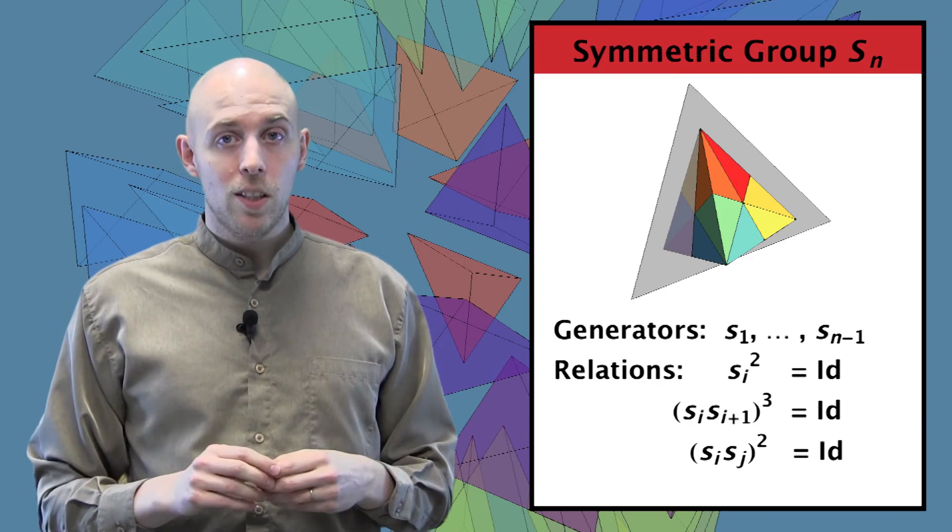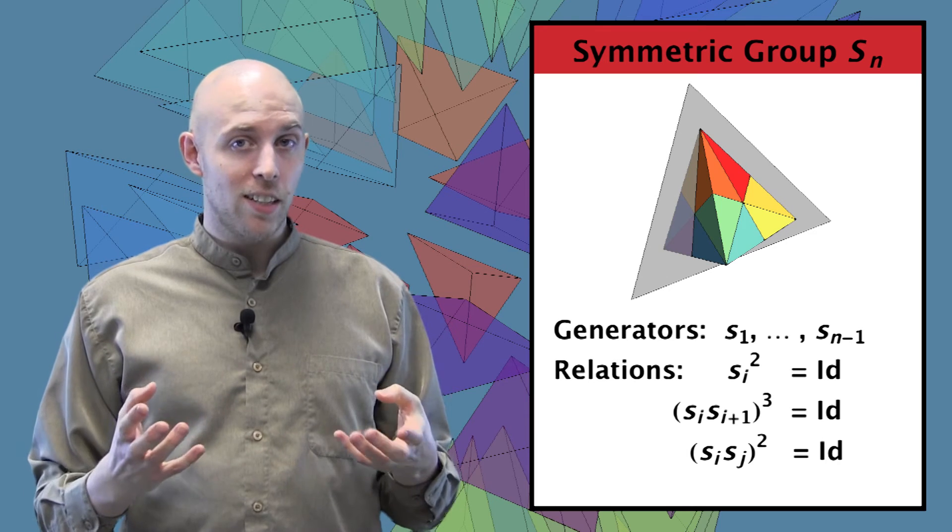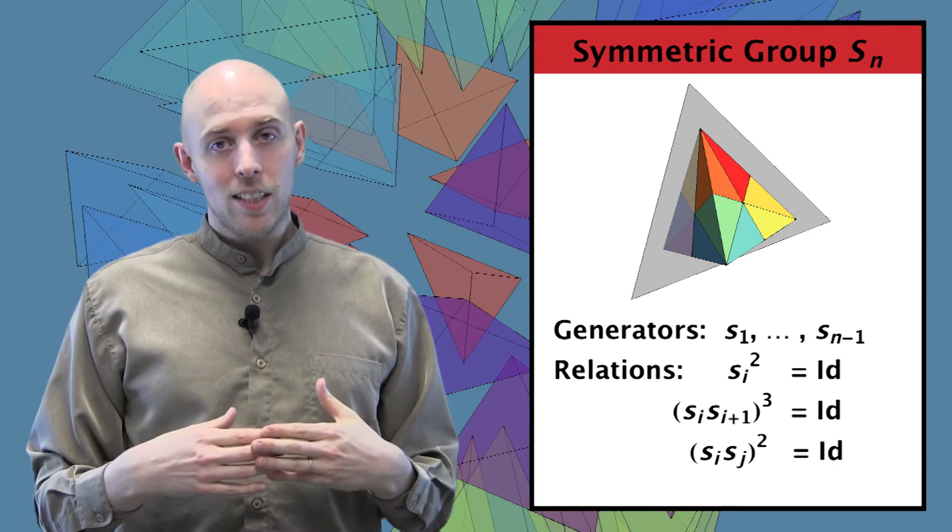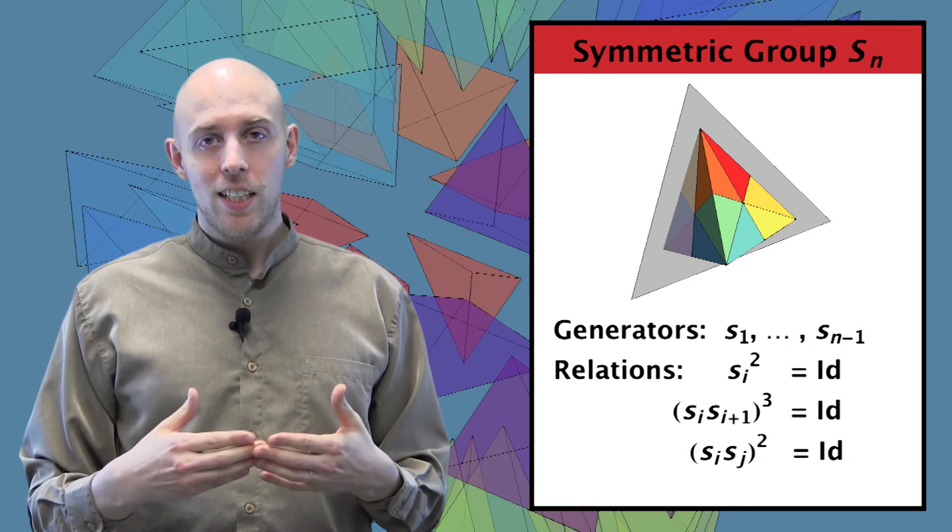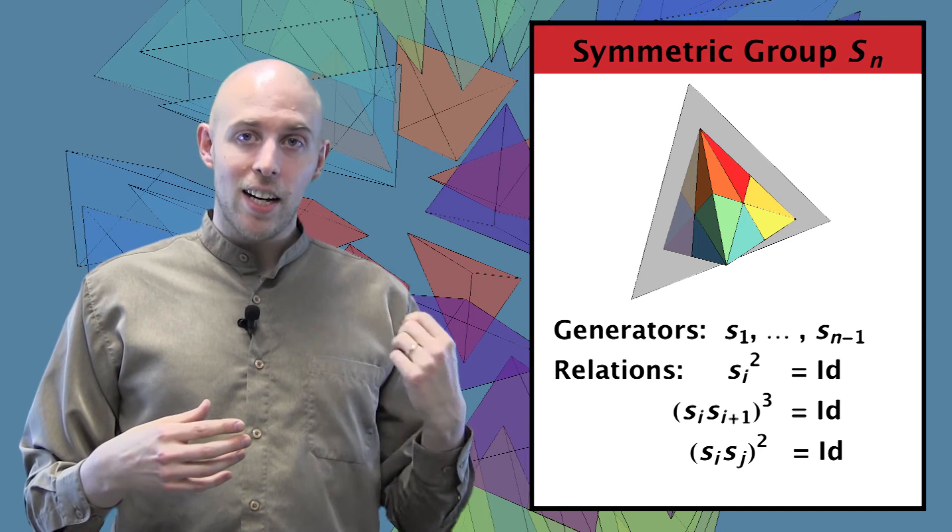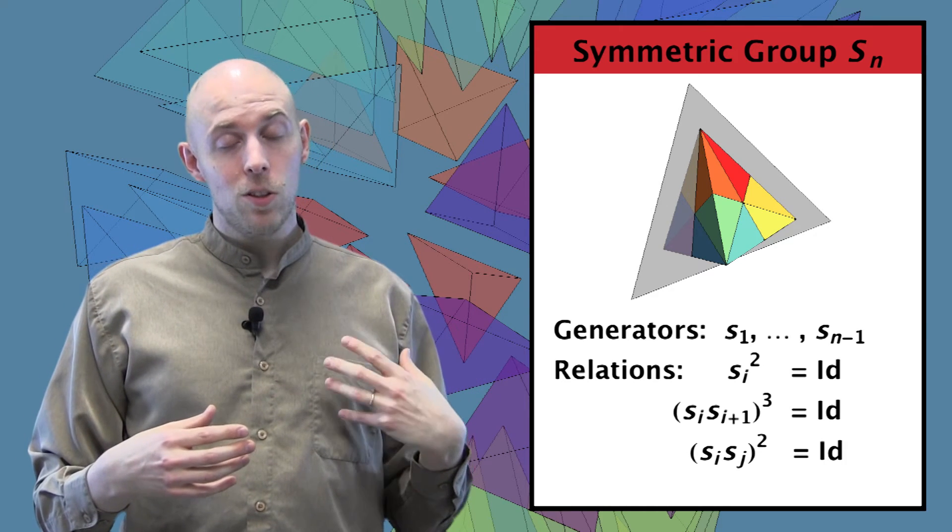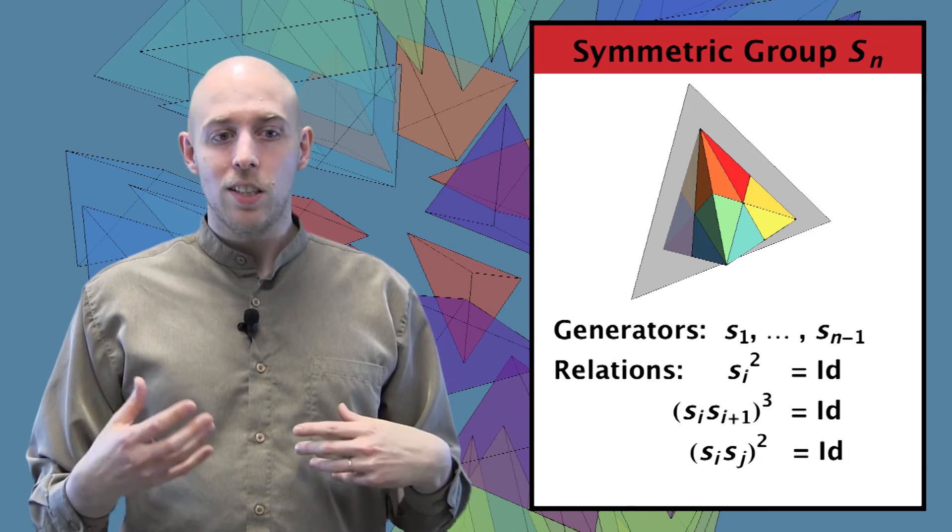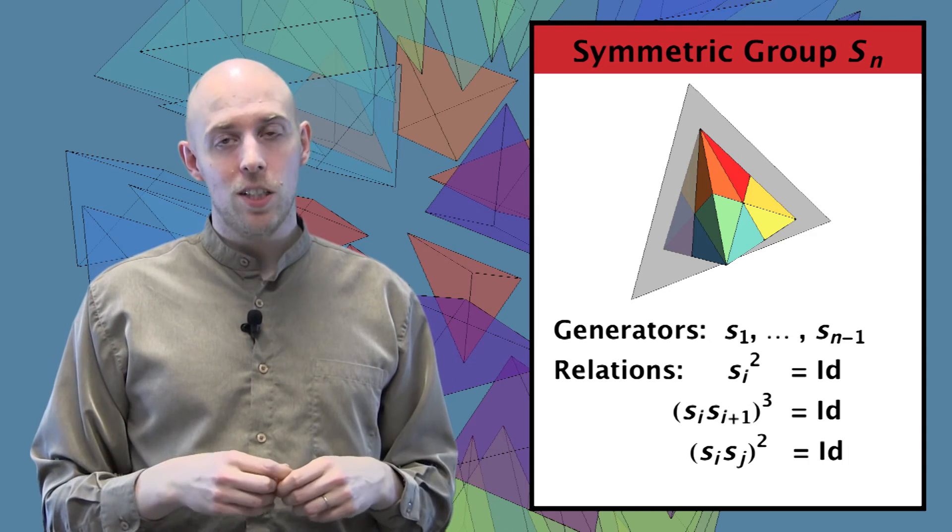As a reflection group, the symmetric group has generators S1 through Sn-1 with relations Si² is equal to the identity. Consecutive generators satisfy (Si, Si+1)³ is equal to the identity. And non-consecutive generators commute, or in other words, (Si, Sj)² is equal to the identity.